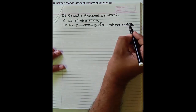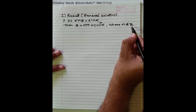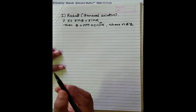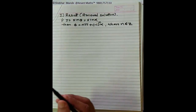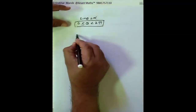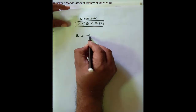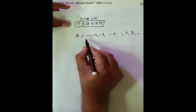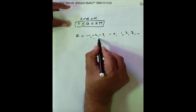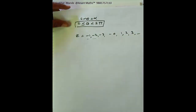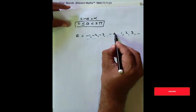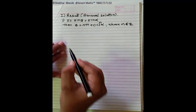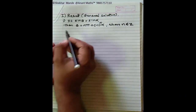Here n belongs to Z, that is, n is an integer. Z means the set of integers — integers may be natural numbers, negative, positive, and zero. That is, Z may be: −1, −2, −3, 0, 1, 2, 3, and so on. So Z is the set of integers and n can take any value of integer.